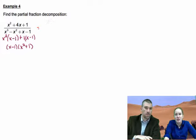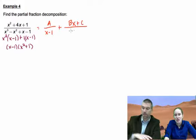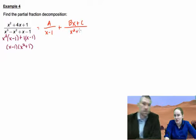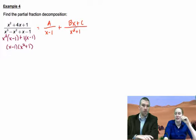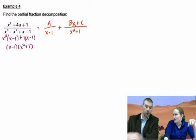So this is going to be A over x minus 1 plus Bx plus C over x squared plus 1. Okay, so in this case, this is one where it may be better to try it the other way.